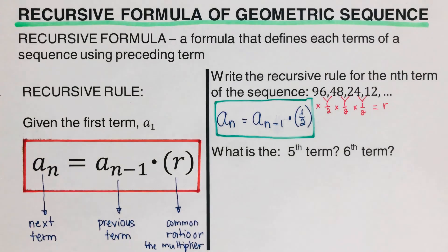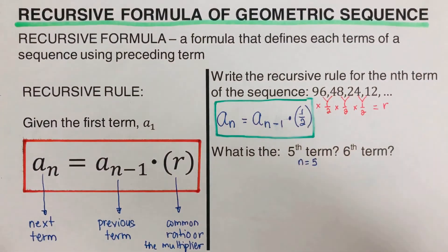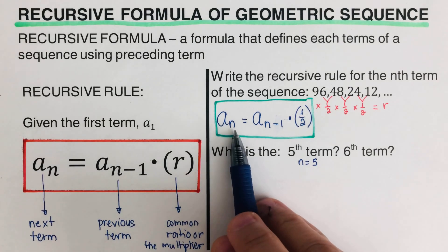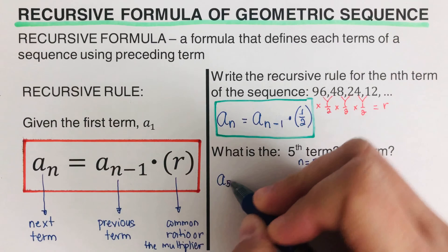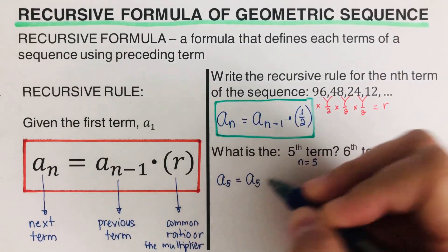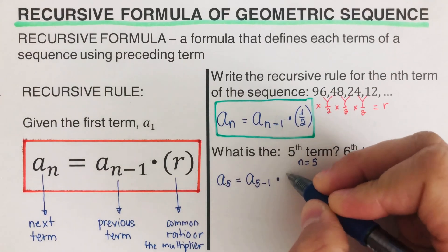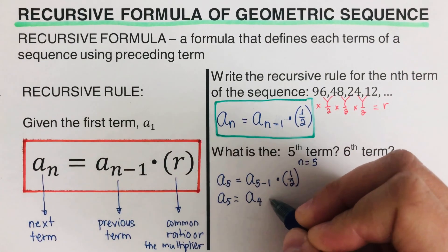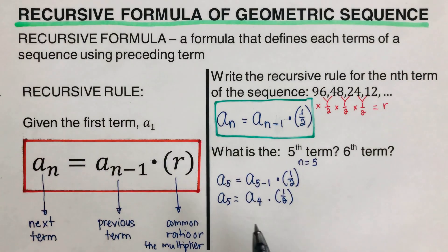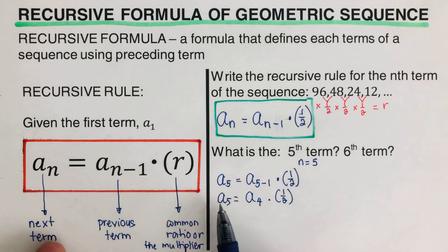In the next problem, we are asked to find the fifth term and the sixth term. For the fifth term, n equals 5, so we plug 5 into the recursive formula. We get: a_5 is equal to a_{5-1} times one-half, which simplifies to a_5 equals a_4 times one-half. Here, a_4 is the previous term and a_5 is the next term — once we know a_4, we can find a_5.